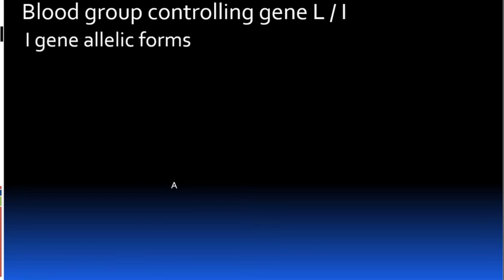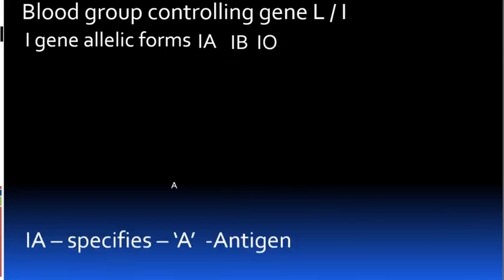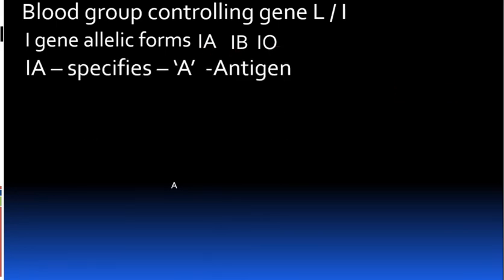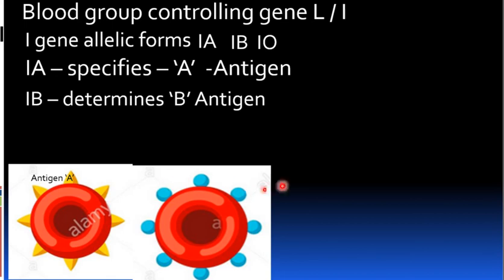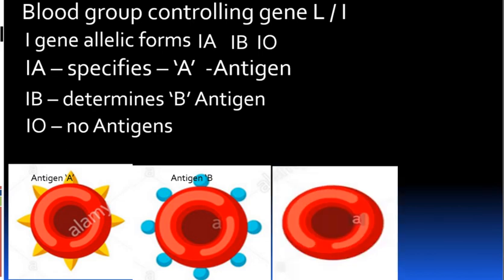The I gene exists in three allele forms: IA, IB, and IO. IA specifies the A antigen, IB determines the B antigen, and the IO allele produces no antigen — this is the null blood group with no antigen.